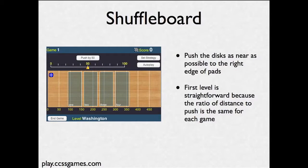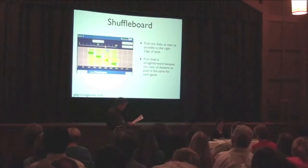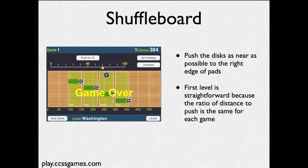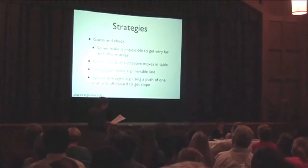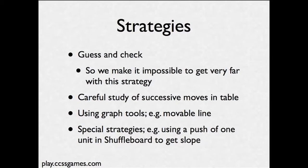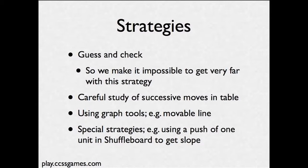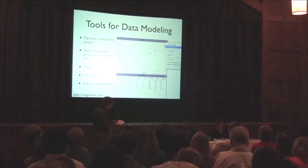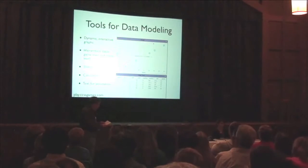Let's look more closely at one game: Shuffleboard. You push the disks, trying to get them to land close to the right edge of each pad. Guess and check works fine on the first level, but it doesn't work after that. Students make careful study of successive moves using the table. Most use the equation of a line in the graph, and some develop clever strategies like pushing one to get the distance-to-push ratio. The games change, but the tools stay the same.